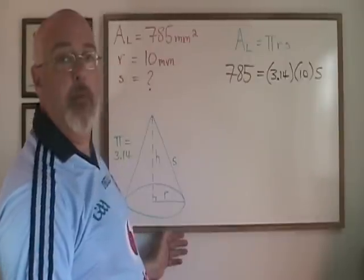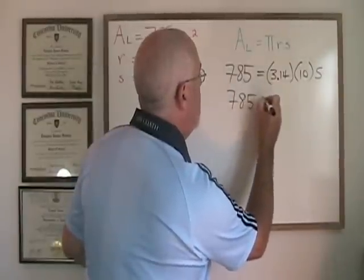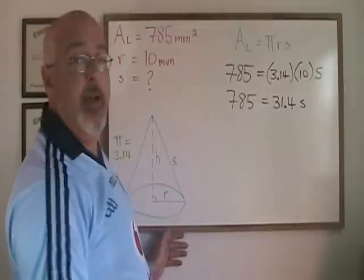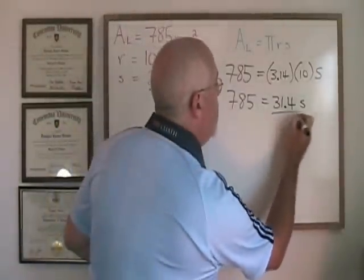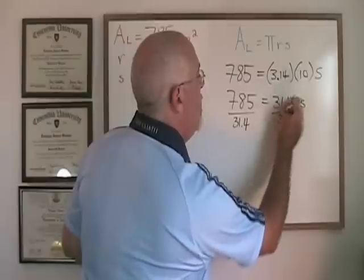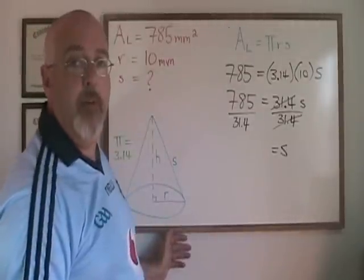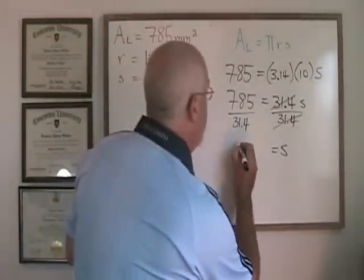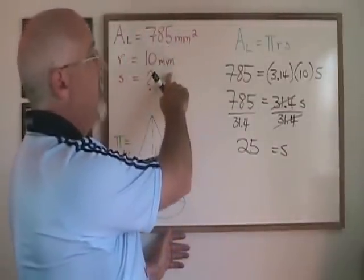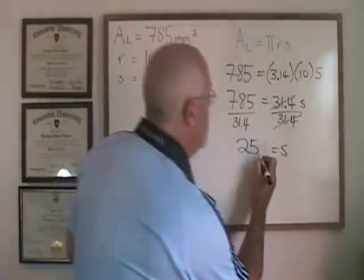First, I'm multiplying 10 times 3.14, which is 31.4, and s is still there. Now if I divide both sides by 31.4, these cancel. My s is isolated, and 785 divided by 31.4 is 25. Since the unit of measure was millimeters and slant height is a distance, the unit of measure for this answer will be millimeters.